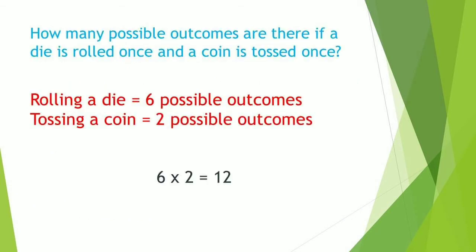The question is, how many possible outcomes are there if a die is rolled once and a coin is tossed once? In rolling a die, we have 6 possible outcomes, and tossing a coin, we have 2 possible outcomes. So what we do is just multiply 6 times 2, then the answer is 12. It's easy with the fundamental counting principle - you just need to know how many possible outcomes each experiment has.